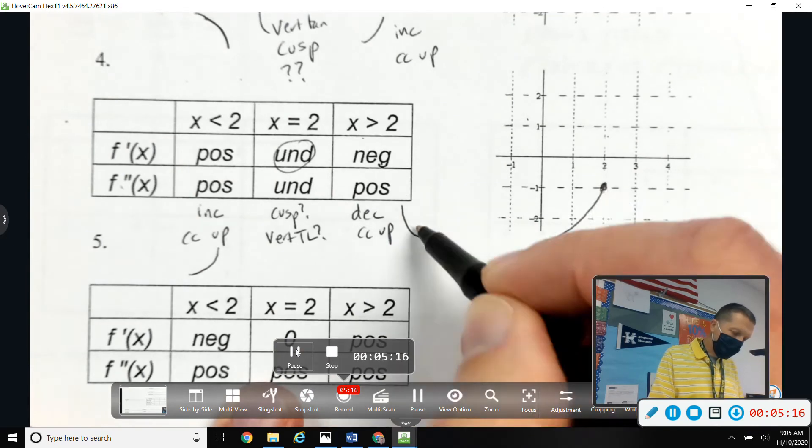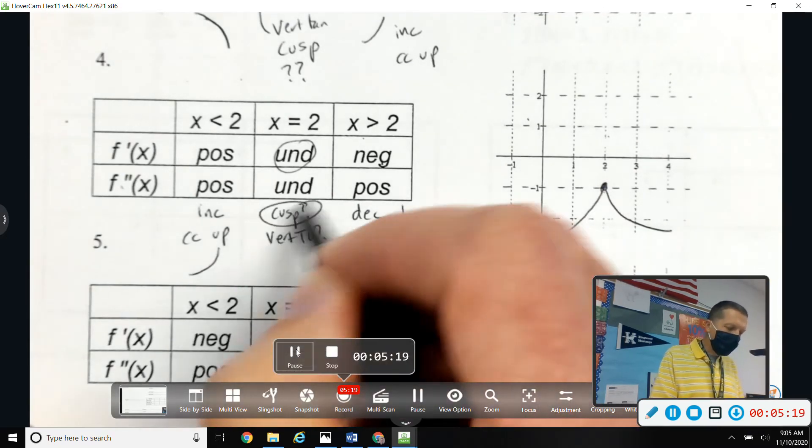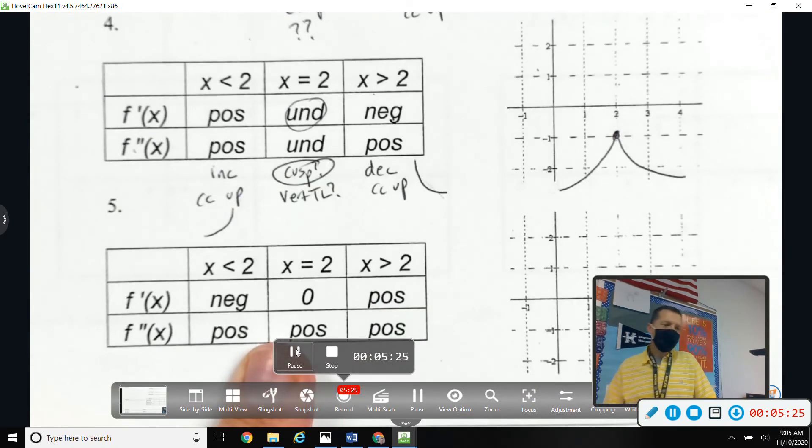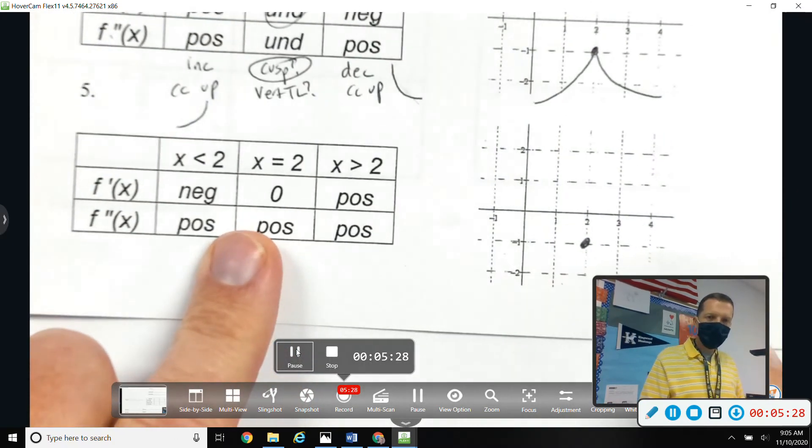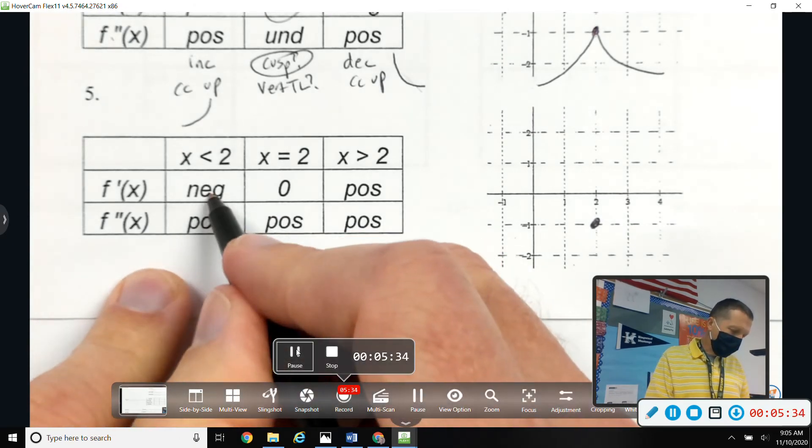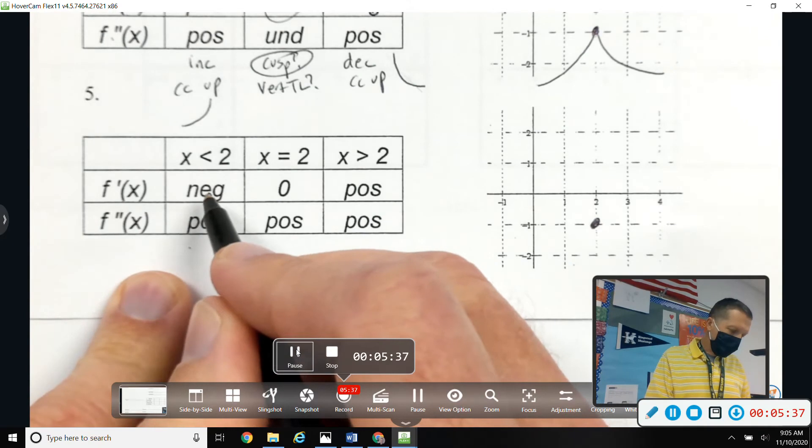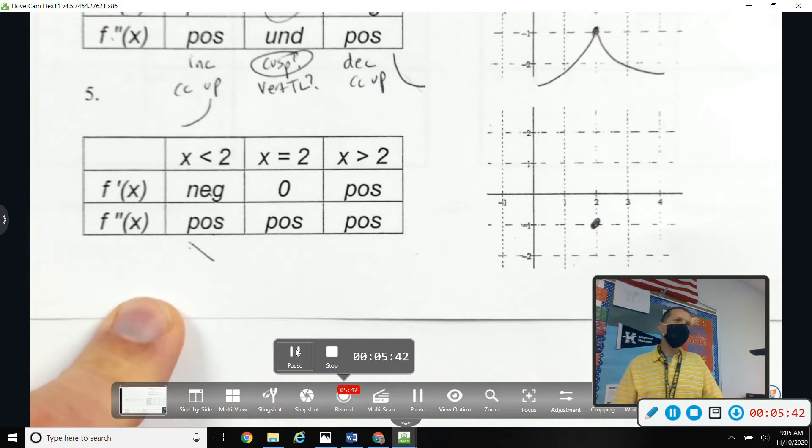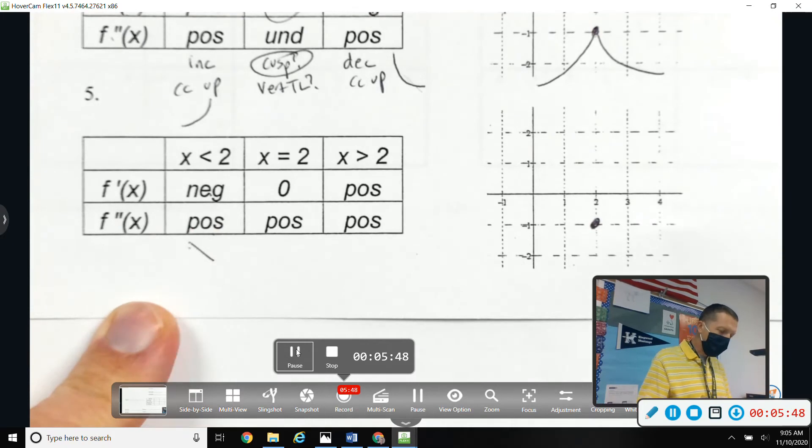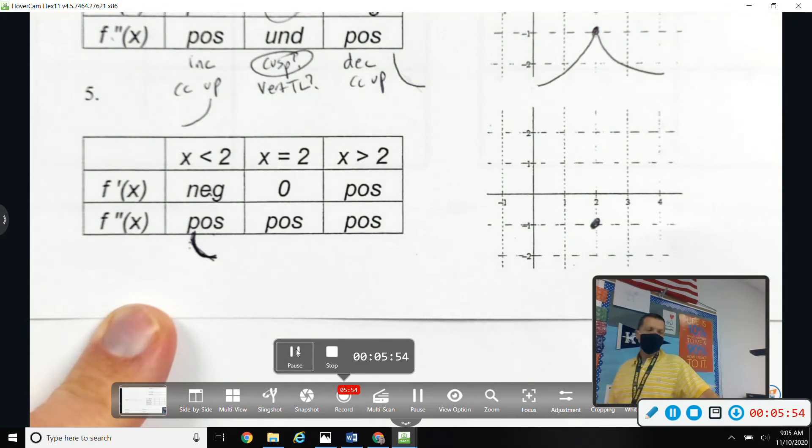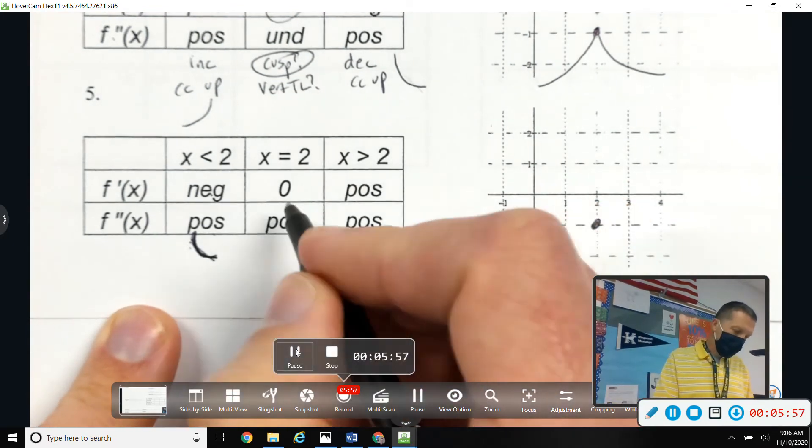That on the other side, and yeah, that does make a cusp. Questions on that one? Number 5: let's see, decreasing concave up. Decreasing - some people will just do a straight line decreasing that way, get the decreasing down, and then when you see that it's concave up, you can sort of adjust your decreasing to be decreasing concave up. Maybe that's a helpful thing to think about.